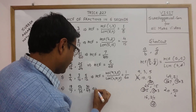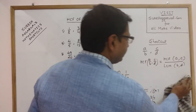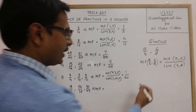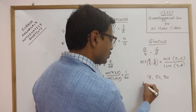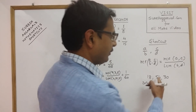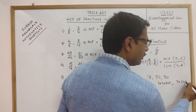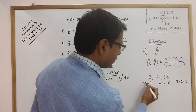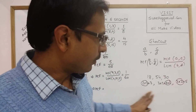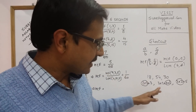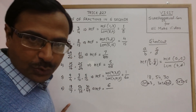Using a similar method for another question: the three numerators are 18, 54, and 30. Now 18 = 2×3×3, 54 = 2×3×3×3, and 30 = 2×3×5. All three numbers contain a common factor of 6 — that is 2×3 — and nothing else is common. So the HCF of the numerators is 6.